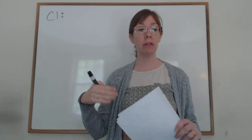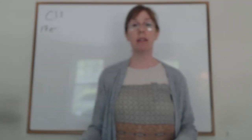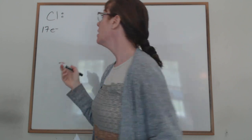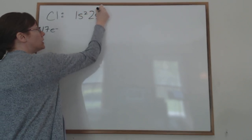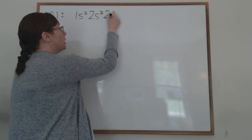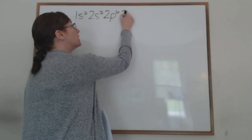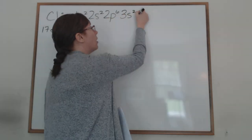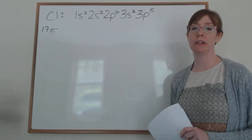Go to your periodic table, figure out how many electrons you have to place into orbitals, and you'll find that chlorine has 17 electrons. As you write the electron configuration, you fill up the lower energy sublevels first: 1s, then 2s, then 2p, then 3s — that places 12 electrons — and the last 5 will be in the 3p sublevel. So that's the electron configuration for chlorine.